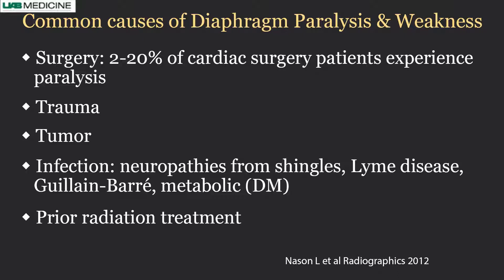Trauma is another cause — penetrating injury to either side, or even a blast injury from a significant gunshot wound, or traumatic motor vehicle accidents can also cause phrenic nerve injury. Tumors — whether primary lung cancer, metastatic disease to the mediastinum, or hilar lymphadenopathy — can involve the phrenic nerve and lead to diaphragm paralysis.